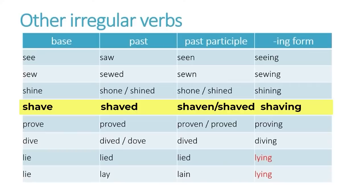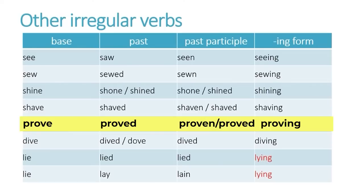'Shave' has a couple of different endings in the past participle. It follows a regular form in the past: shave, shaved. But in the past participle, some people say 'shaven,' some people say 'shaved.' With 'prove,' there are also two different forms in the past participle: proven or proved. But the past is simply a regular verb with ED: proved. So: prove, proved, proven — or prove, proved, proved.